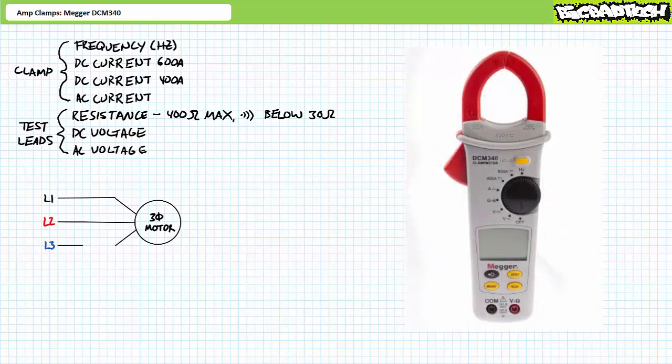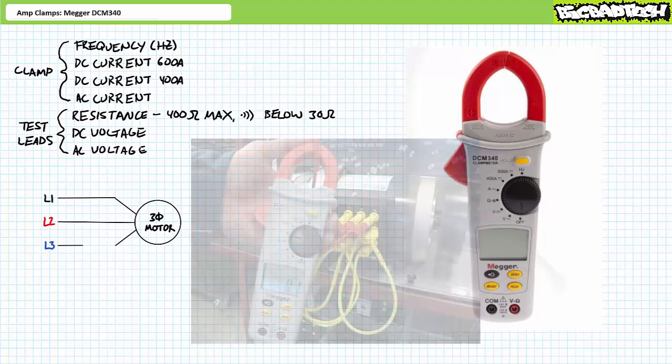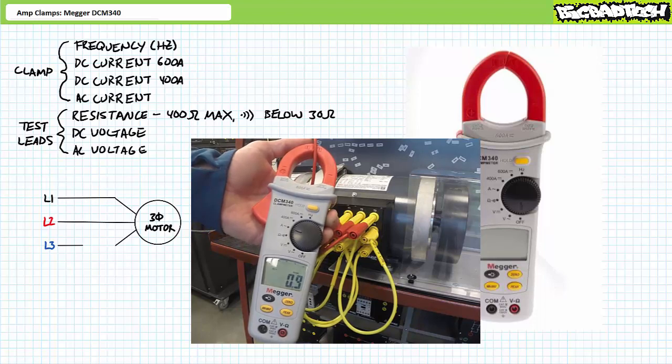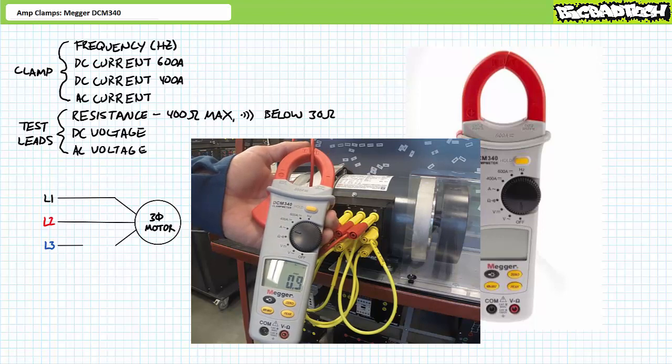Additionally, an amp clamp can be used in real time to measure the magnitude of inrush, the momentary surge of current experienced when a motor is energized by a full voltage across the line or direct online starter. Here, the Mega DCM340 in AC amp clamp mode demonstrates the motor experiences a momentary surge of 7.7 amps, and after it comes up to speed, current stabilizes at roughly 0.9 amps.